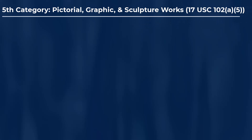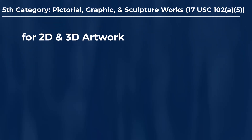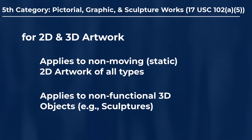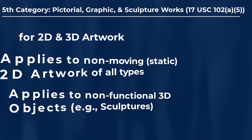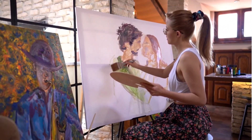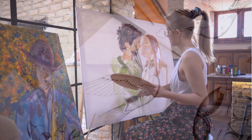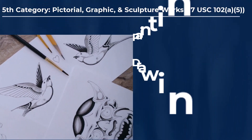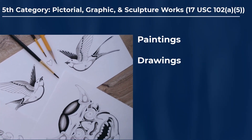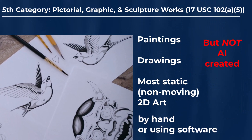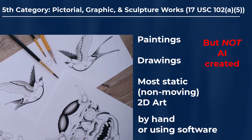The fifth category of creative works that can generally be protected by U.S. copyrights is for pictorial, graphic, and/or sculptural works. You could say that this fifth category is for protecting artwork — more specifically, for protecting two-dimensional and/or three-dimensional (2D and/or 3D) artwork. Examples may include paintings, drawings, and/or the like. Basically, any type of visual, two-dimensional, static, and non-moving art might fall into this fifth category.